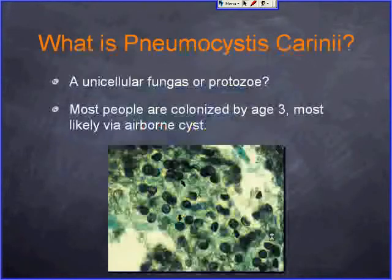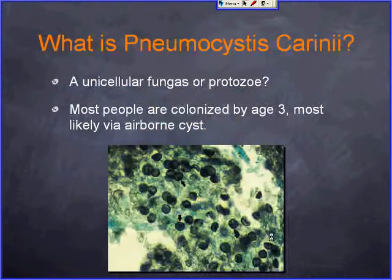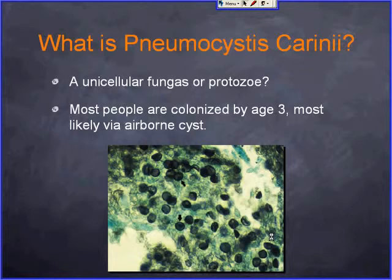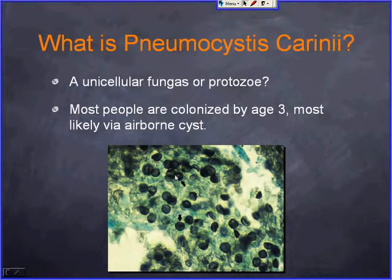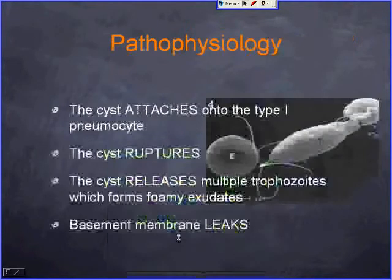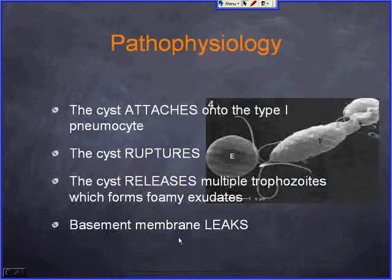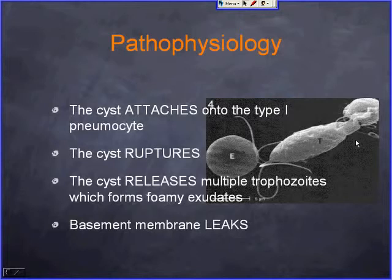In the infectious category, Pneumocystis carinii — some argue it is a fungus, others believe it is a protozoan. Most people are colonized, so we are all carriers. It is transmitted through airborne cysts. The cysts attach to type one pneumocytes, rupture, and release trophozoites, which attach to the pneumocyte, form exudates, and cause basement membrane leaks through cytokines.